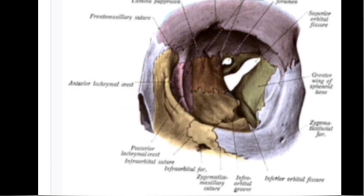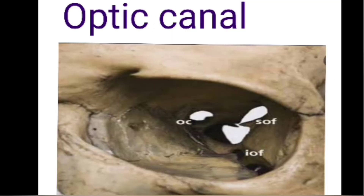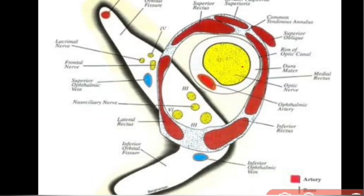The apex is at the posterior end where all four walls converge. There are two important openings here: the optic canal and the superior orbital fissure. The optic canal connects the orbit to the middle cranial fossa. It transmits the optic nerve from the orbital cavity to the middle cranial fossa, and the ophthalmic artery with meninges and the carotid plexus of sympathetic fibers from the middle cranial fossa to the orbital cavity.